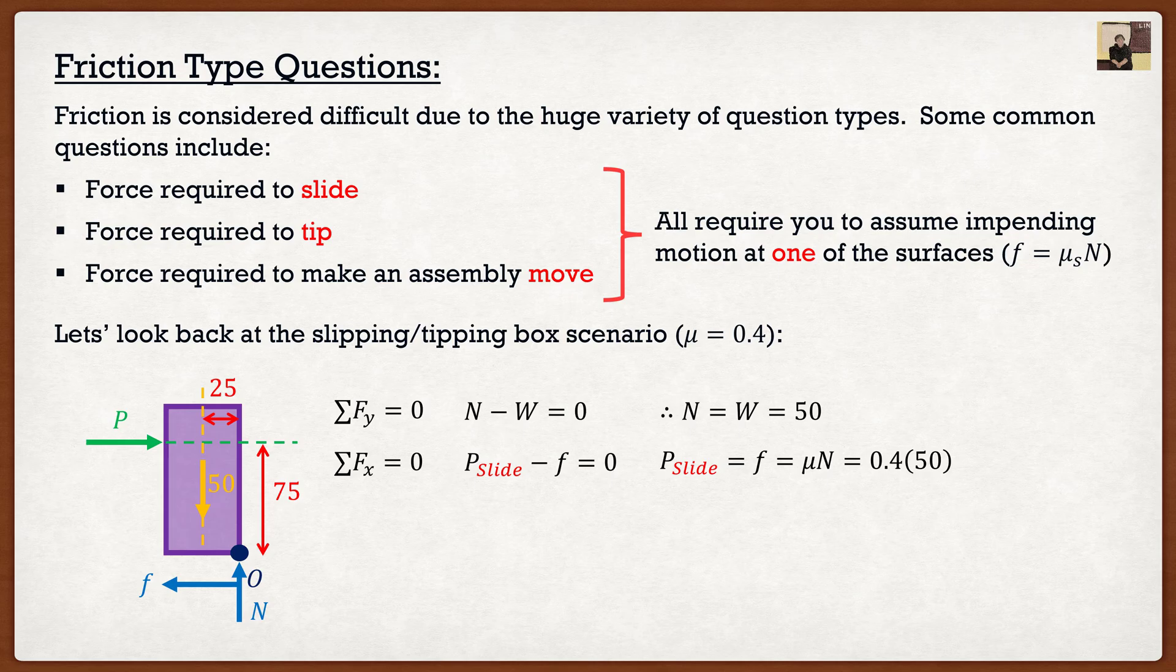And we were saying if this frictional force is just on the verge of moving, or the system was just on the verge of moving, we have the formula where it's equal to μ times N. So we know that μ is 0.4 and the normal force is what we saw for above.